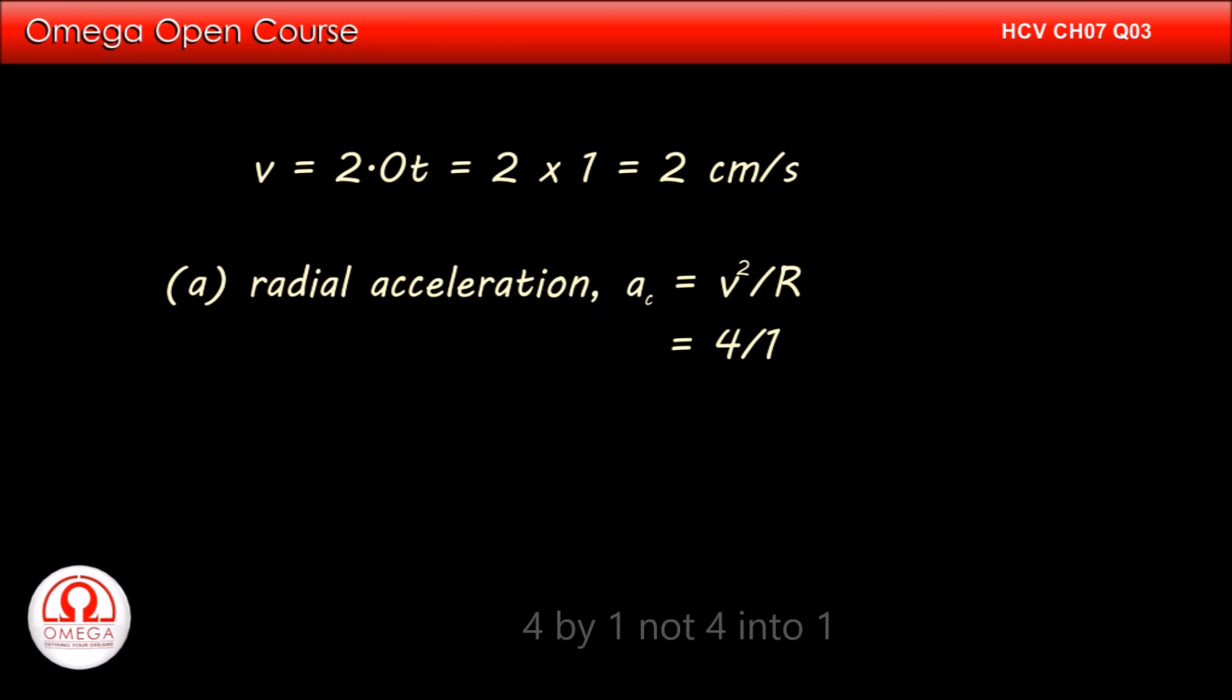Instantaneous velocity of the particle at t equals 1 second is 2 times 1 or 2 cm per second. Radial acceleration is given by v squared divided by r. Putting the values we get 4 divided by 1 or 4 cm per second squared. This is the answer to part a of the question.